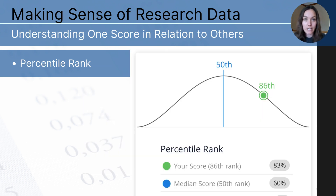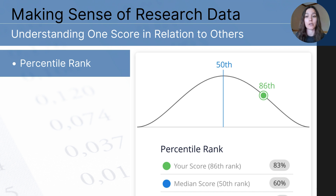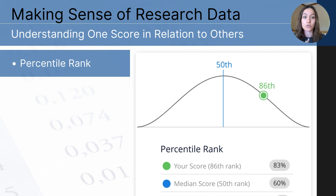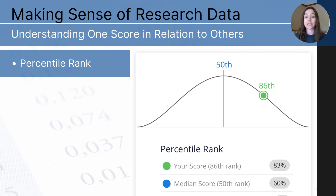Another way to talk about data points is by using percentile rank. Percentile rank is not a measure of central tendency and it's not a measure of variation — it's a way to summarize a single data point in relation to the other data points in the distribution. Percentile rank indicates the percentage of scores that fall below a specific score. For example, if a student's score is in the 86th percentile, that means their score is higher than 86% of the other data points in that set, providing context about the position of a score relative to the entire distribution.